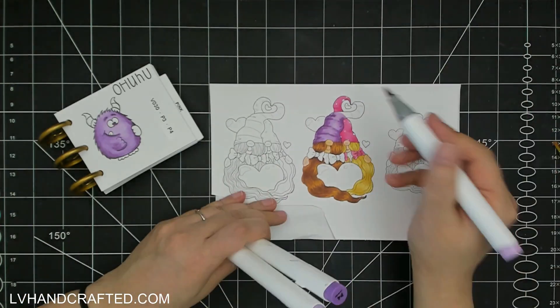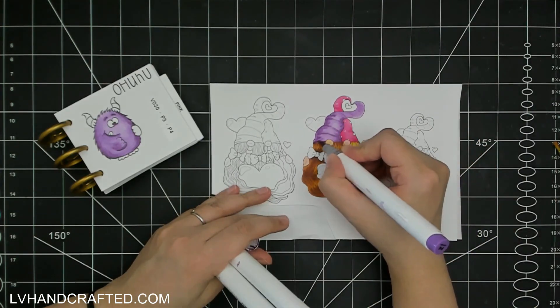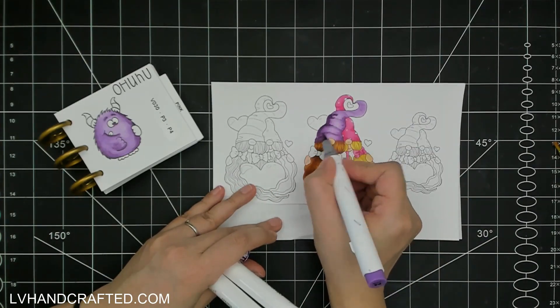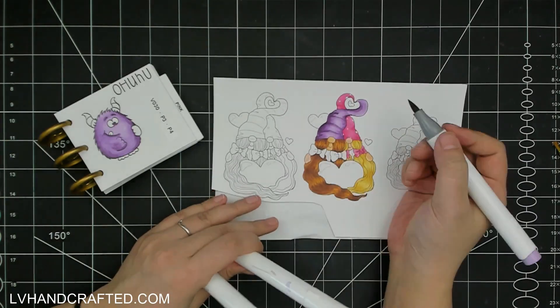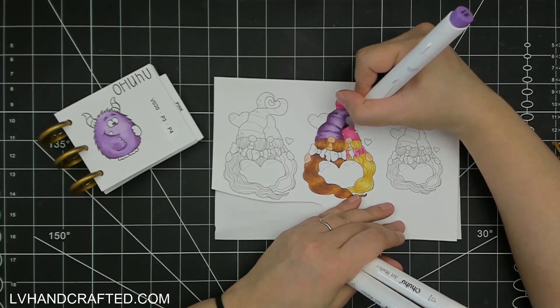As you go lighter, the lighter colors tend to have more of the alcohol blending solution, so it does tend to bleach out what's underneath it.